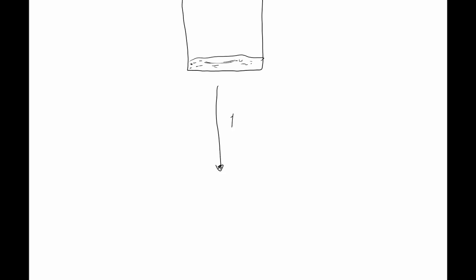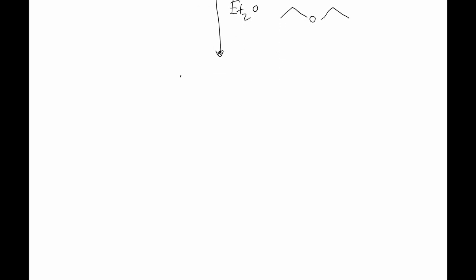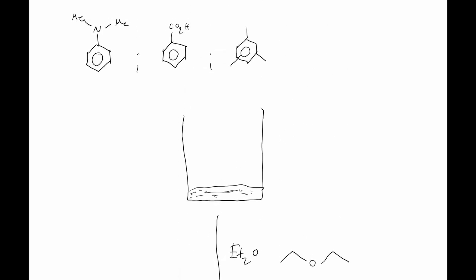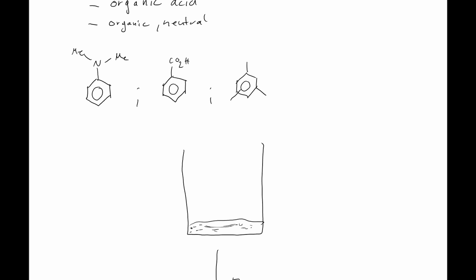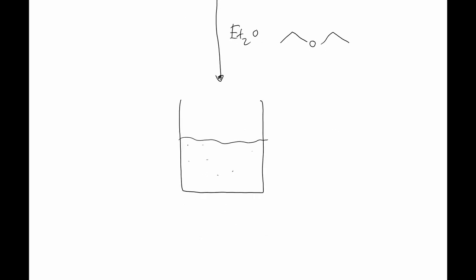Now, let us add some diethyl ether, which is a very useful solvent in organic chemistry. Upon addition of diethyl ether, we would see that most of the compounds would go into solution, since all of these compounds are reasonably non-polar. Of course, some acid-base reaction can take place between dimethylaniline and benzoic acid to a small extent, so we could end up with some particulates still in the beaker.